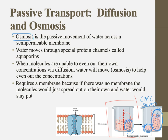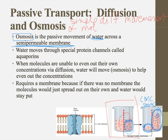The definition of osmosis — and you must know this — is the passive movement of water across a semipermeable membrane. Commit that definition to memory. Simple diffusion is the movement of molecules from an area of high concentration to low concentration; it does not require a membrane. Osmosis, on the other hand, definitely requires a membrane. Without a membrane, simple diffusion would just take place. Osmosis only occurs when there's a membrane and water has to do the moving to even out the concentrations.